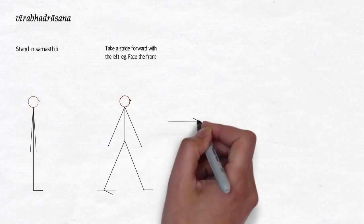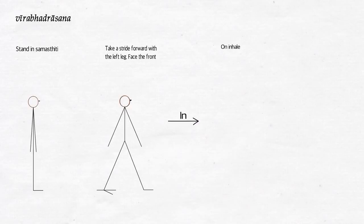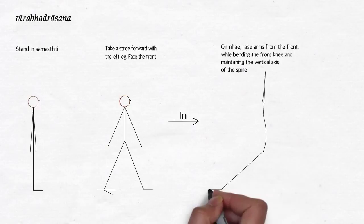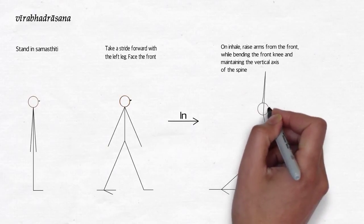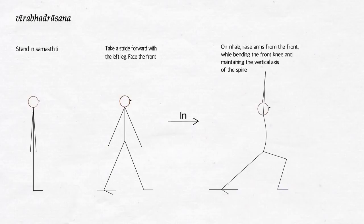On inhale, raise the arms from the front while bending the front knee and maintaining the vertical axis of the spine. The back is arched, front knee bent, weight placed on both legs. The arms are straight across the ears, palms together, eyes open, looking directly in front.